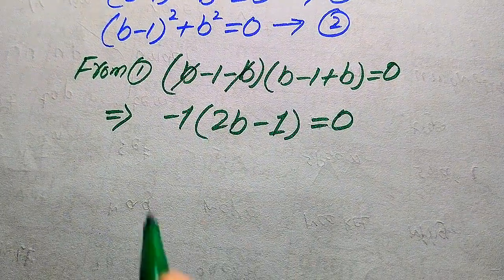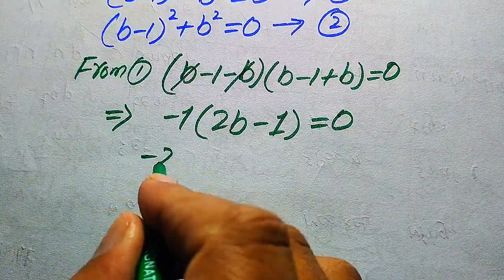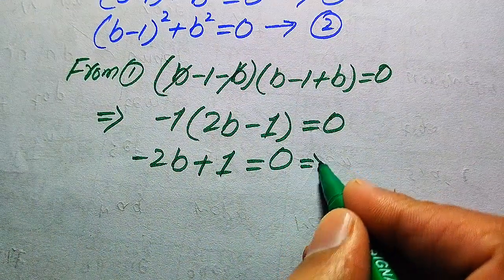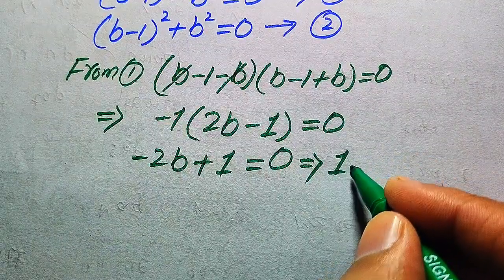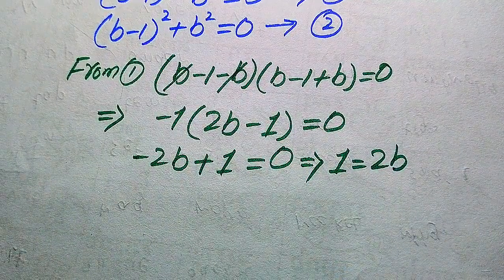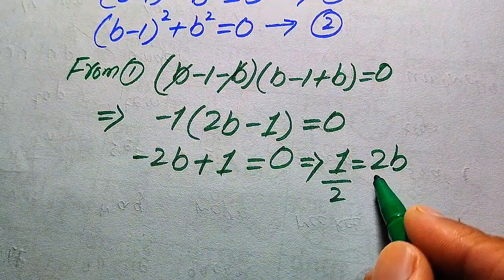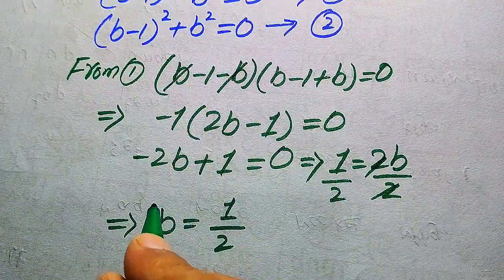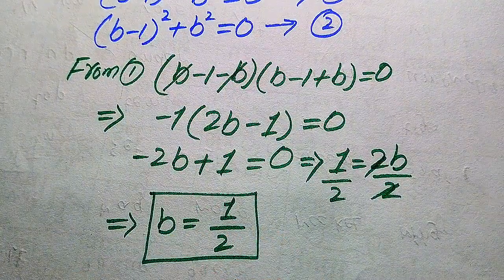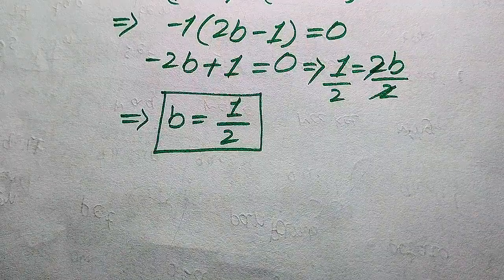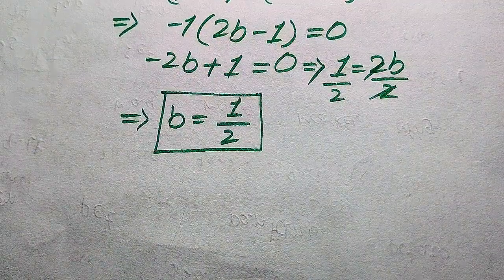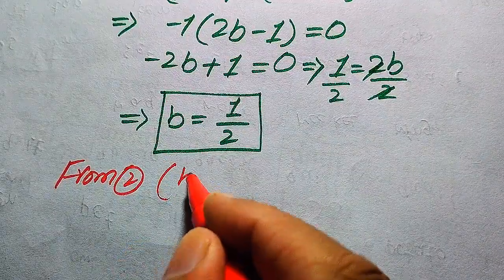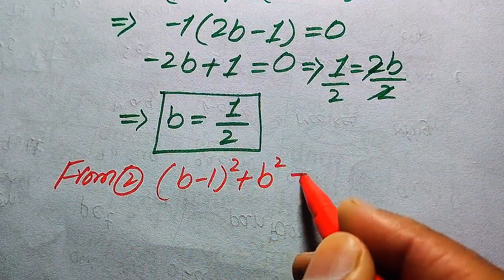We multiply the negative sign through: minus 2b plus 1 equals 0. Moving minus 2b to the right hand side gives 1 equals 2b. Dividing both sides by 2, we get b equals 1/2. This is the first root of the given equation from equation 1. For the other roots, we now solve equation 2: (b-1)² plus b² equals 0.